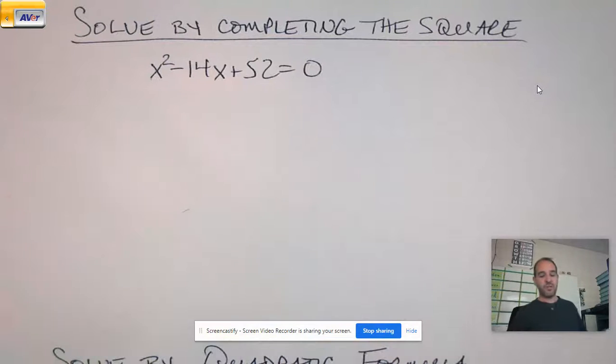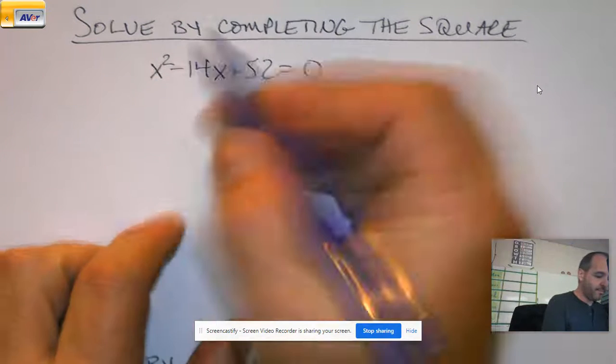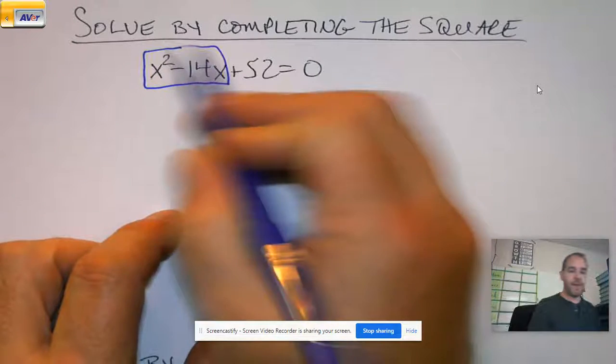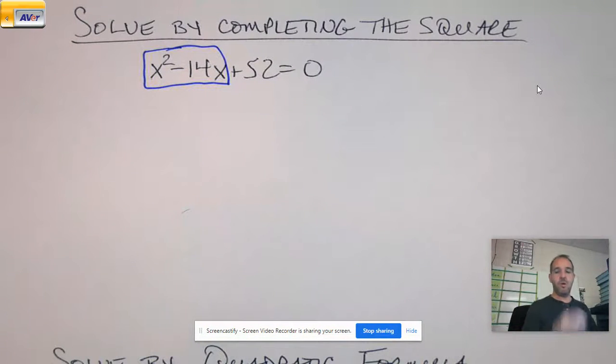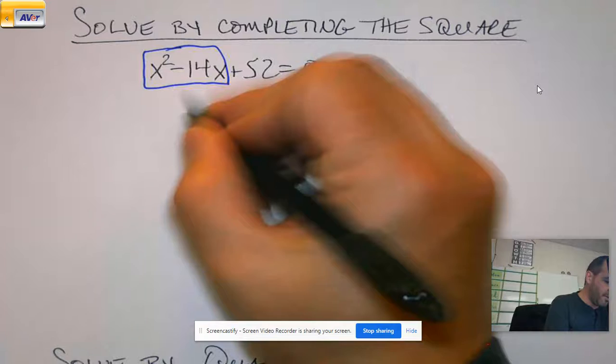So how do we complete the square? Well, hopefully you've still got your song sheet from before. You may need to go back, check out DJ Pi again. But remember, when we're solving by completing the square, my first job is to get my x's alone. So we're going to minus the 52 to the other side.